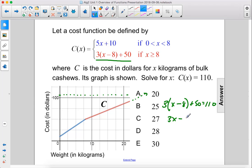3x minus 24 plus 50 equals 110. 3x plus 26 equals 110. 3x equals 84.